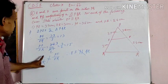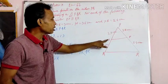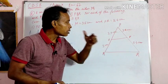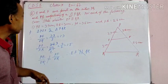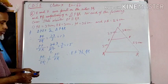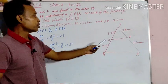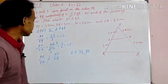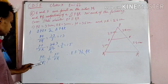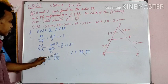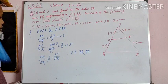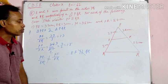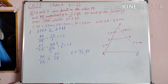If PE by EQ equals PF by FR, then we can say that according to the Converse of the Basic Proportionality Theorem, EF is parallel to QR. But here PE by EQ is not equal to PF by FR. So EF is not parallel to QR.